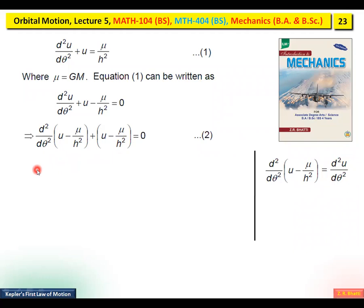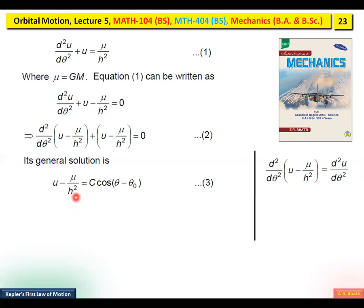This is a second-order differential equation. You may recall that in the previous lecture — Lecture 4 on Orbital Motion — we derived its solution by going through all the steps. If you have any issues with the calculation, please refer to Lecture 4. The solution of Equation 2 is Equation 3.